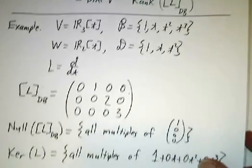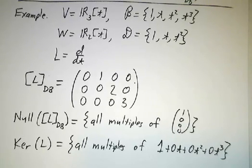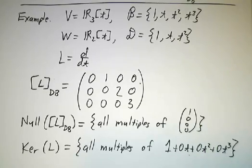To understand the kernel, you usually want to figure out the matrix and do a bunch of row reduction to get the null space. And once you've done that, you have to do some interpreting of the results, go back from the coordinates to the actual vectors.